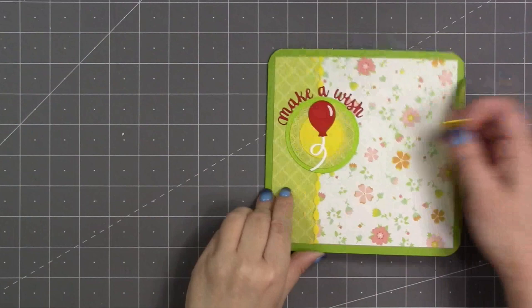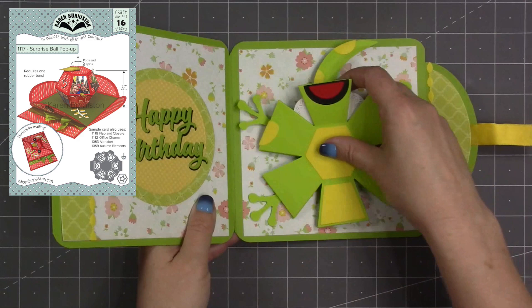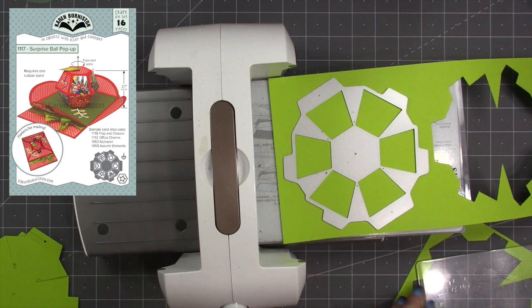Hello, it's Karen Burniston here with my monthly designer challenge video. The theme this month is double, the idea being to double up the pop-up inside a card. Inspired by the design team and all the fun animals they've been making using our surprise ball pop-up, I decided to make this cute little lizard.